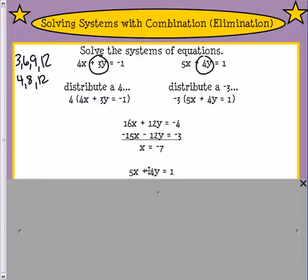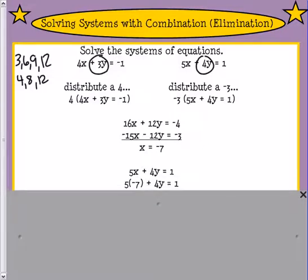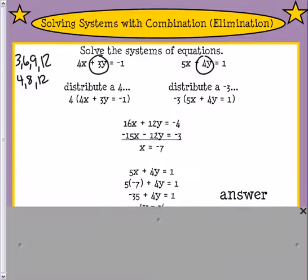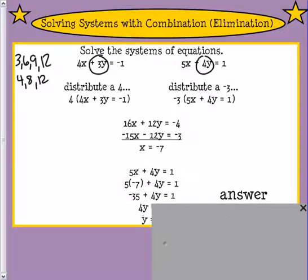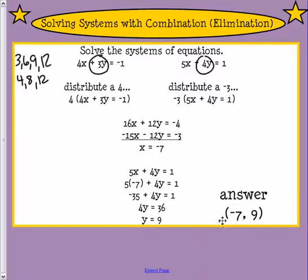Now we've got to plug that back into one of the equations. I'm going to pick this one. And the 7 goes in for the x. So 5 times negative 7 is negative 35. Make sure that you solve on both sides by simplifying and divide by 4. Y equals 9. So our answer is negative 7, 9.